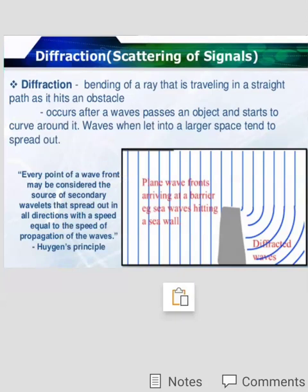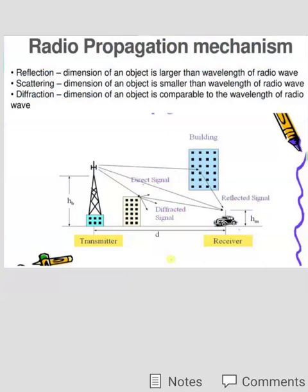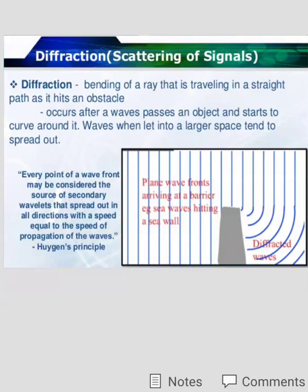It occurs after a wave passes an object and starts to curve around it as shown in above figure. Waves, when let into large space tend to spread out. This is regarding our scattering or diffraction.